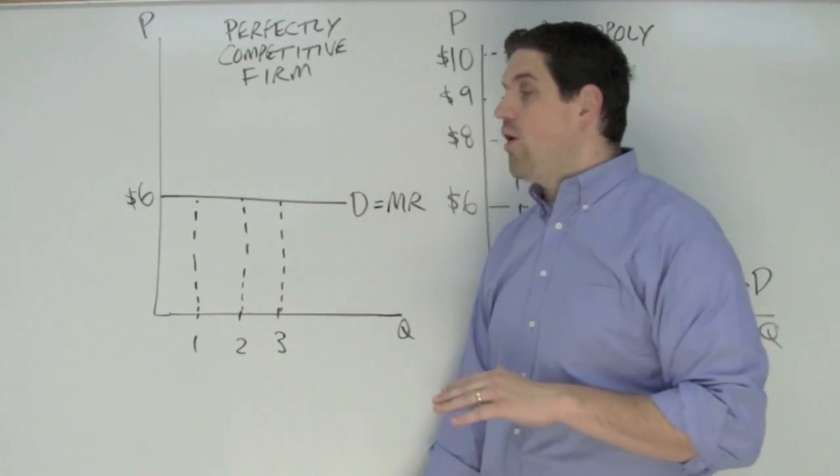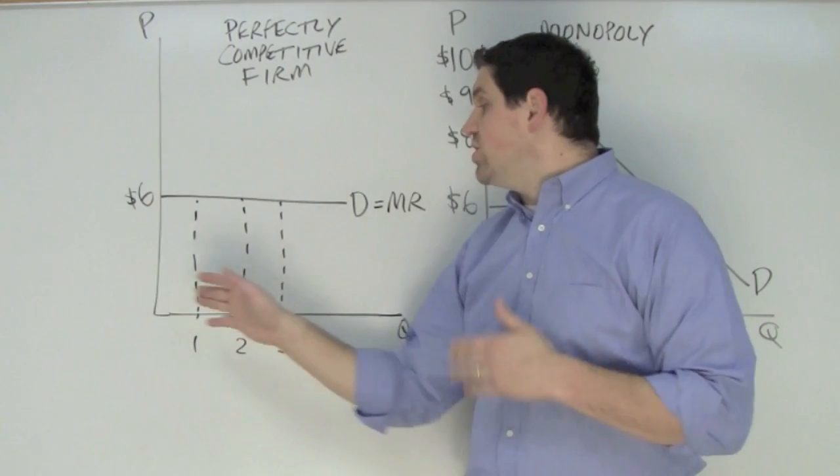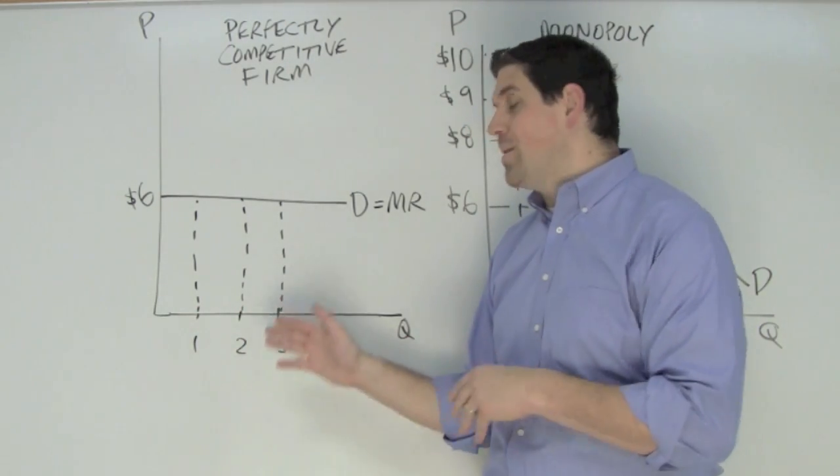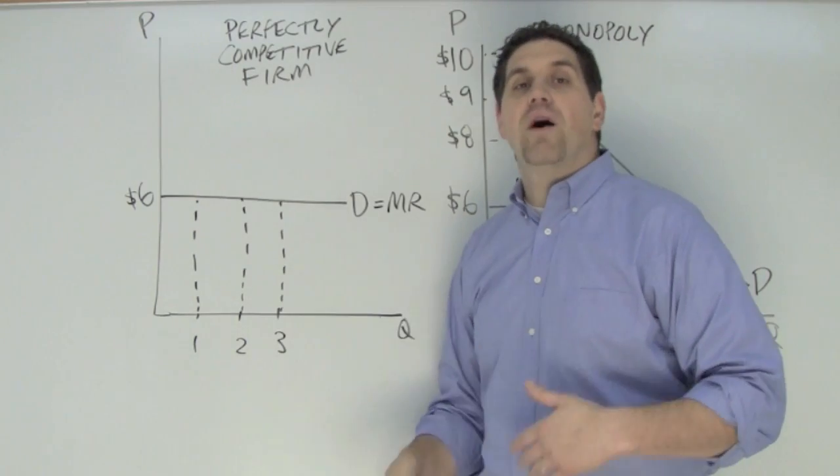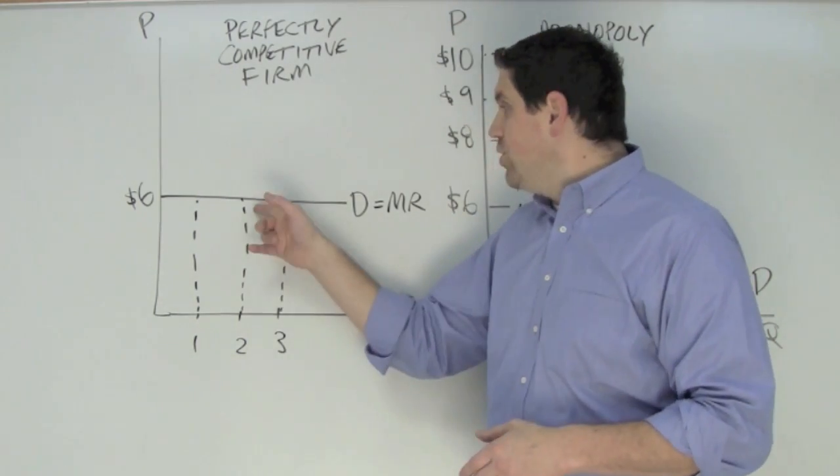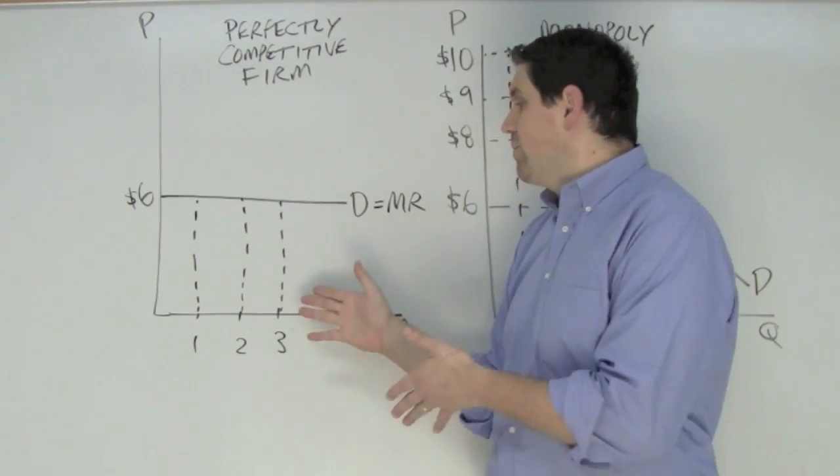In a perfectly competitive firm, the price is set at $6. This firm can sell as many units as it wants at the price set by the market. For the first unit, the price is $6 and the additional revenue is $6. For the next unit, they sell another one for $6, and the additional revenue is $6.